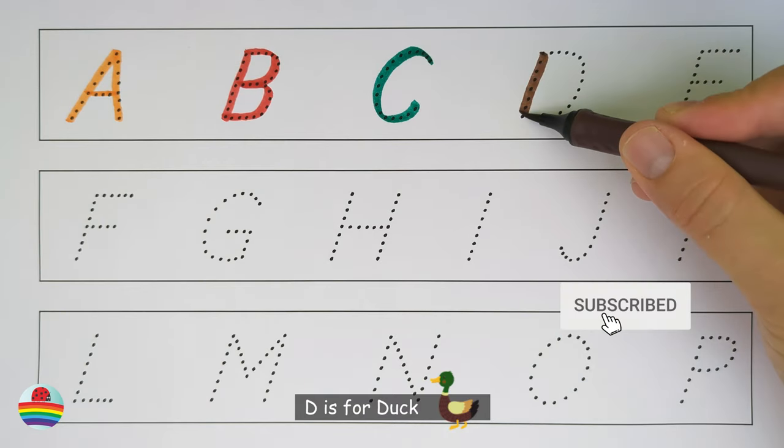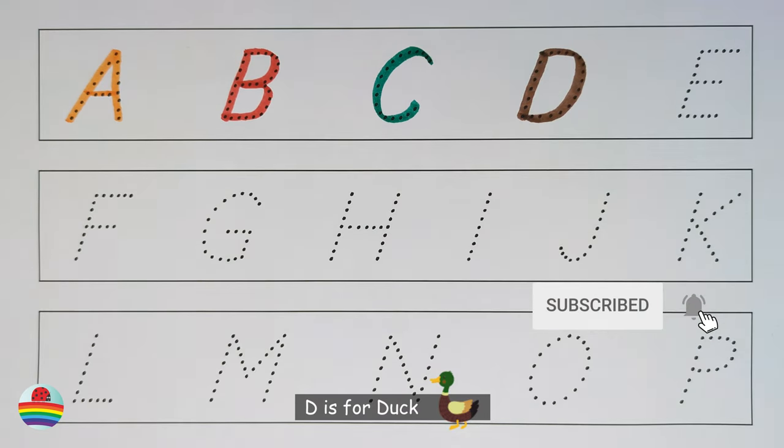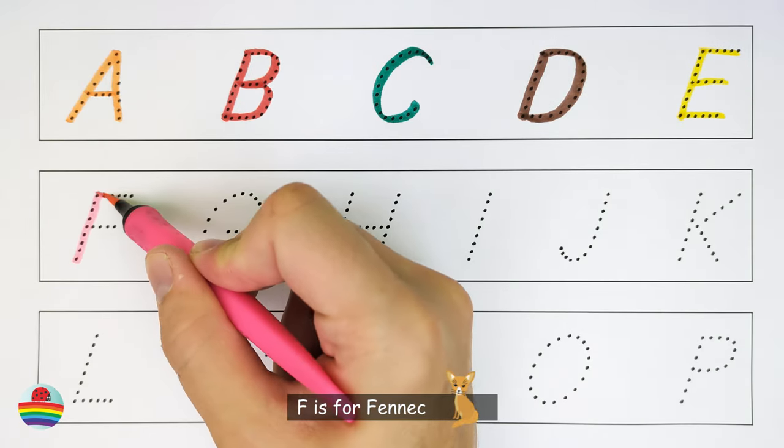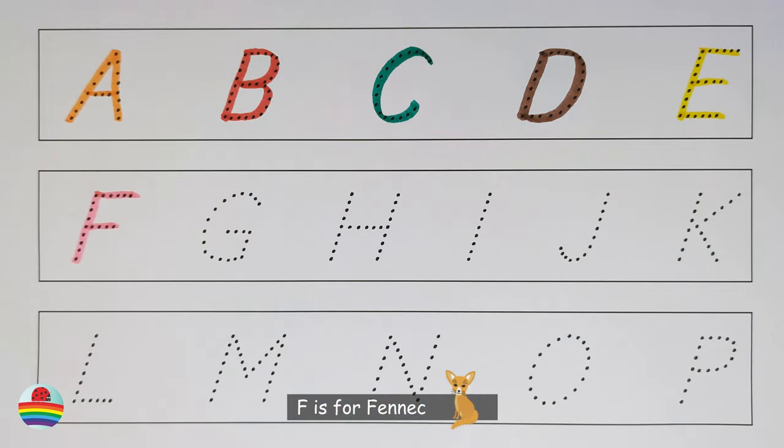D. D is for duck. E. E is for eagle. F. F is for fennec.